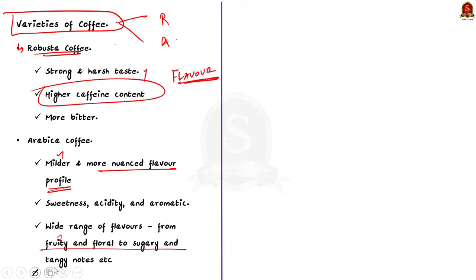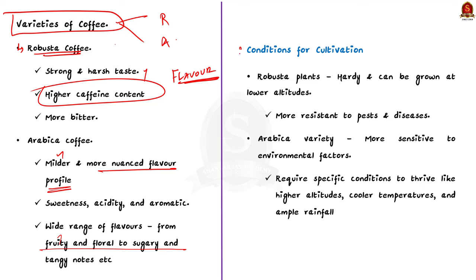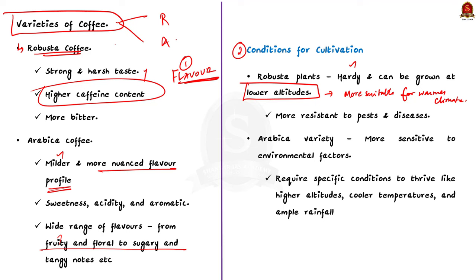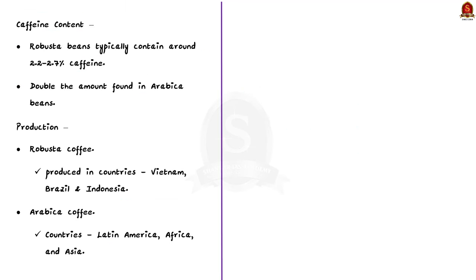Regarding cultivation conditions: Robusta plants are hardy and can be grown at lower altitudes, making them more suitable for regions with warmer climates, and they are more resistant to pests and diseases compared to Arabica. Arabica is more sensitive to environmental factors, requiring specific conditions like higher altitudes, cooler temperatures and ample rainfall. To put it succinctly: remember that Robusta is robust. Robusta beans typically contain around 2.2 to 2.7% caffeine, almost double the amount found in Arabica.